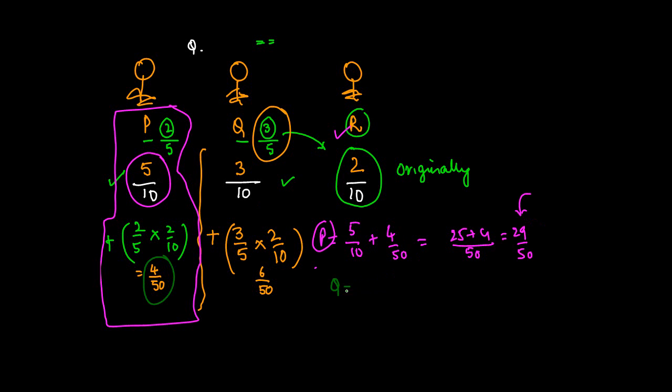Q as well. 3 by 10 is what he had originally. 6 by 50 is what he gets. LCM 15... 21 by 50. So the new ratio is equal to 29 by 50 is to 21 by 50, or 29:21.